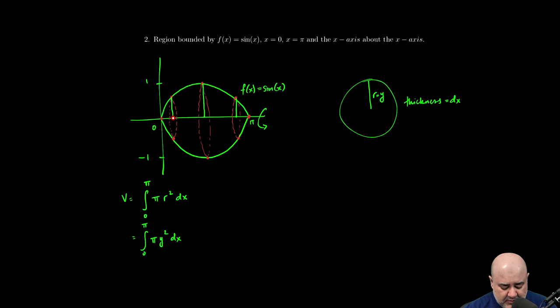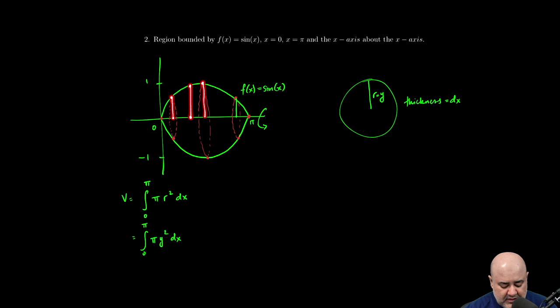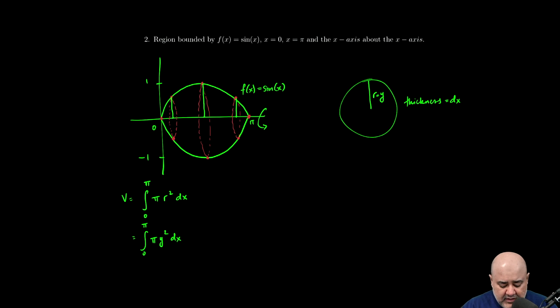So if you think about the distance from this point to this point, that y value is different from the distance from here to here, and that's different from the distance from here to here. All those y values can be defined by finding the y value of this function at some x value.